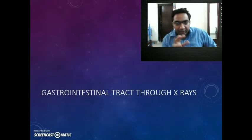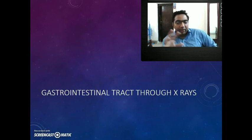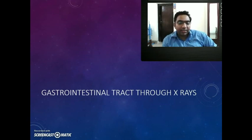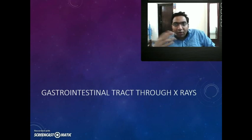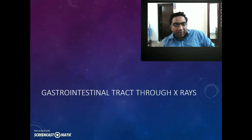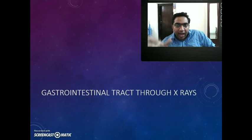Now that we have identified how to visualize a pneumoperitoneum and understood its importance as perforation peritonitis, and how to identify multiple air fluid levels suggestive of intestinal obstruction, we will try to read the multiple shadows — the multiple black shadows — we see in the abdominal X-ray erect. This is the gastro-intestinal tract in abdominal X-ray erect, and in the following part of the presentation we will use both supine and erect X-rays to identify the GI tract.